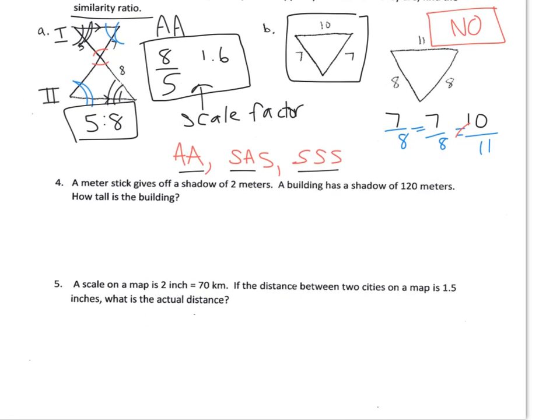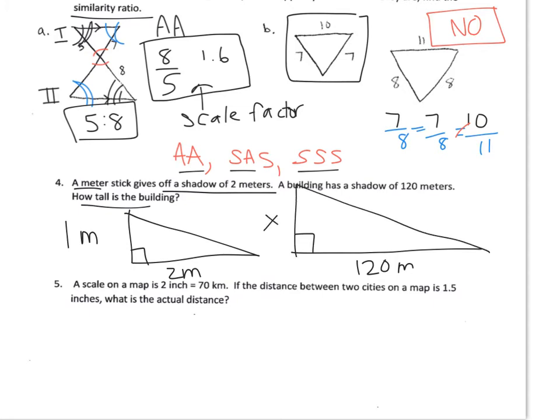Number 4, a meter stick gives off a shadow of 2 meters. A building has a shadow of 120 meters. How tall is the building? So it's going to be X. These are similar triangles because the sun is coming in at the same angle. So these angles are the same and it's going to be a right triangle. So I can set up a proportion that 1 is to 2 as X is to 120. So when I solve for X, X equals 60, don't forget your units, meters.